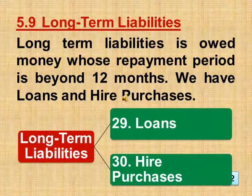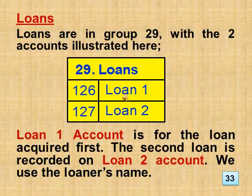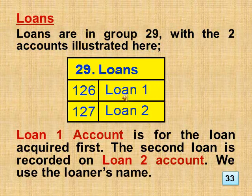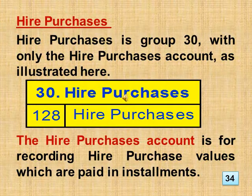Section 5.9 Long-Term Liabilities. Long-term liabilities is owed money whose repayment period is beyond 12 months. We have Loans and Hire Purchases. Loans are in Group 29, with two accounts: Loan 1 account is for the loan acquired first, and Loan 2 account is for the second loan — we use the loaner's name. Hire Purchases is Group 30, with only the Hire Purchases account. The Hire Purchases account is for recording hire purchase values which are paid in installments.